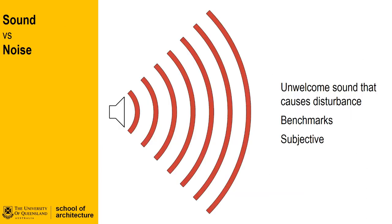Sound becomes noise when it either causes disturbance or, worse still, physical harm. Benchmarks and standards have been developed based on an averaging of disturbance or harm. With the right equipment, the sound level can be measured. In some instances where the noise in an environment cannot be controlled, additional personal protection equipment such as earmuffs are needed to protect that person in the environment. In other instances such as meeting rooms, offices, or auditoria, the control of sound levels must be achieved through the design of the space.